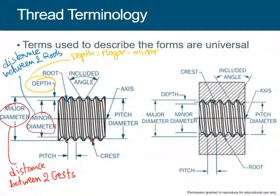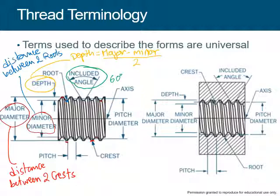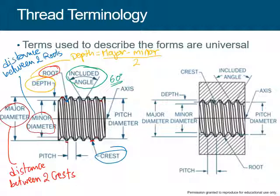If you subtract the major diameter from the minor diameter, you get the depth — and you would need to divide by two because that would be on both sides. The involute angle is the angle of the thread; there are many different versions, but the most common angle is 60 degrees. We will cover other angles and explain why 60 is the most common.